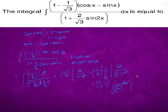Where t is sin x plus cos x. So the final answer is tan inverse of (sin x plus cos x) upon root 8 times root 3 by 2 minus 1, plus C.